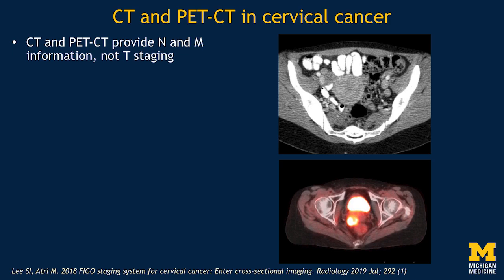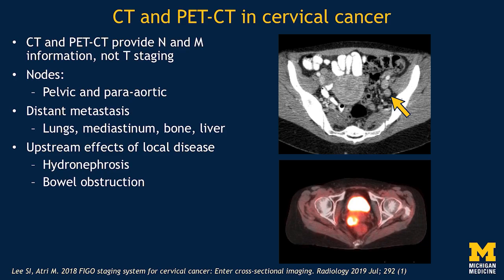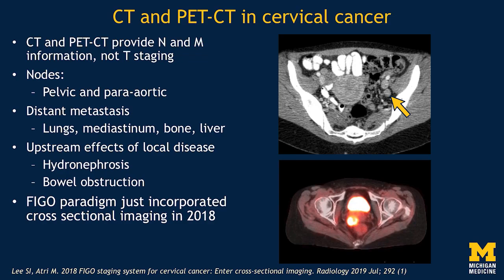CT and PET are extremely helpful to provide nodal and metastatic staging — N and M staging — but not so much tumor staging. Just like endometrial cancer, we look for pelvic and para-aortic lymph nodes and for distant metastases, which in cervix tend to go to lungs, mediastinum, bone, and liver. We also look for upstream effects of local disease, particularly hydronephrosis. Cervical cancer likes to involve the distal ureters, cause upstream obstruction of the kidneys, and even renal failure, which can be a cause of death in women with cervical cancer. Ureteral involvement confers a higher stage, so that's something to always remark upon when looking at these CTs.